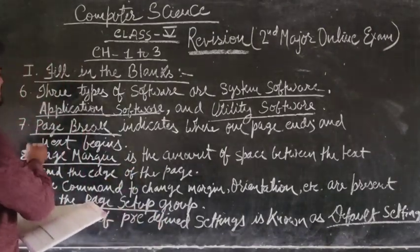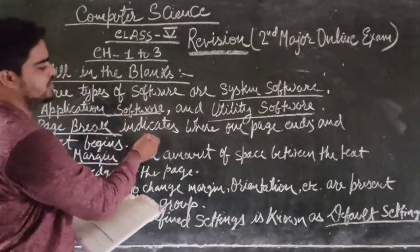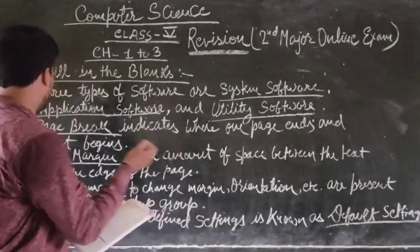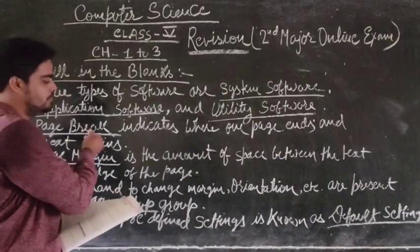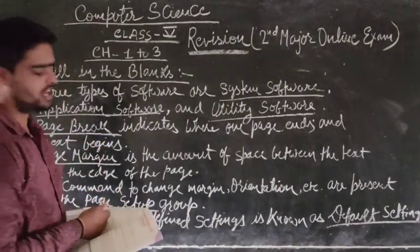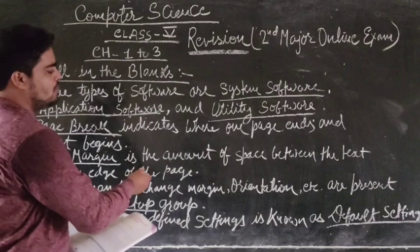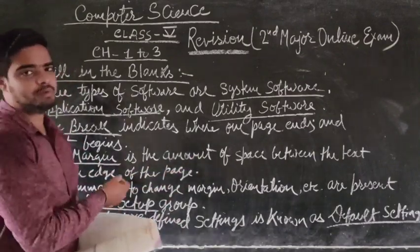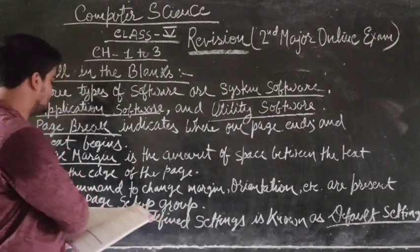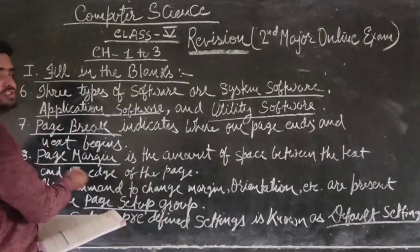Question 7: Dashed indicates where one page ends and next begins. The answer is page break. Question 8: Dashed is the amount of space between the text and the edge of the page. The answer is page margin.